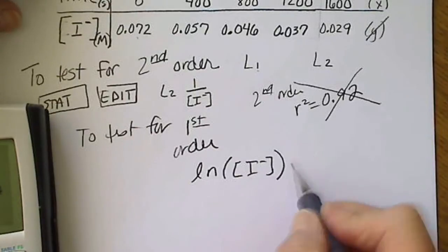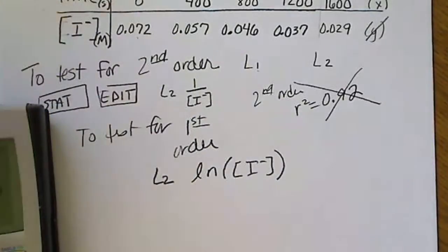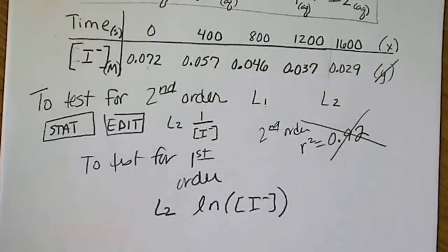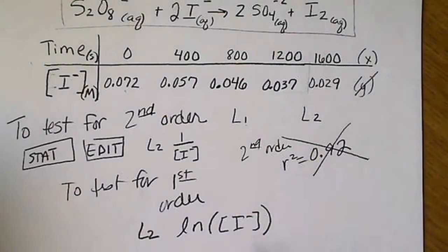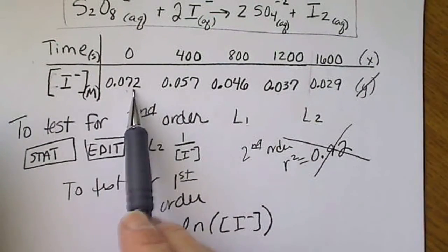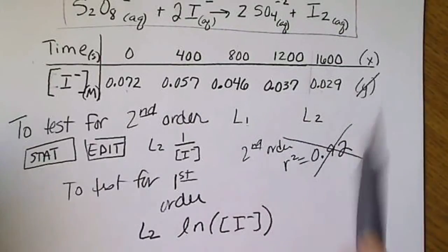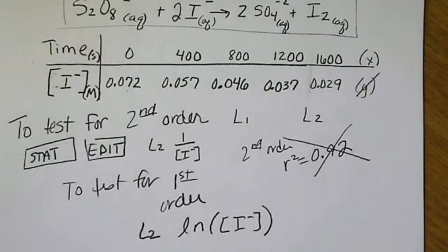That's what we want to enter as L2. L1 is still going to be the time. And so now we're going to take the natural log of each one of these values. And then if we do get a linear equation, then we know we've got first-order kinetics.